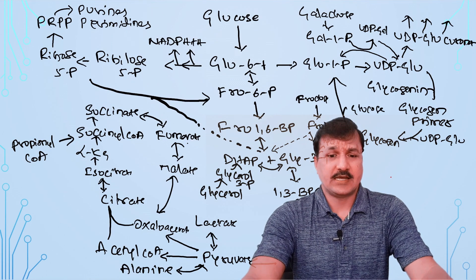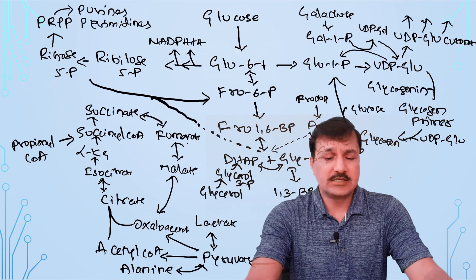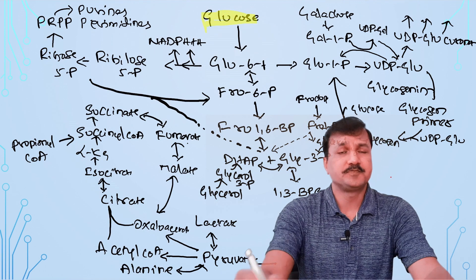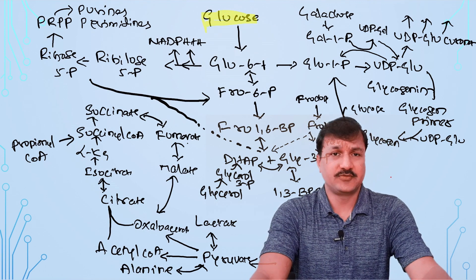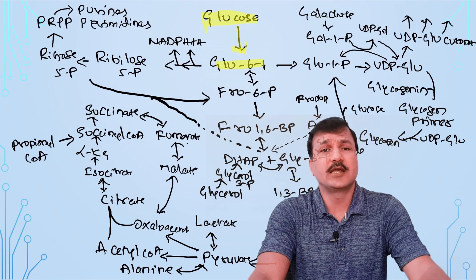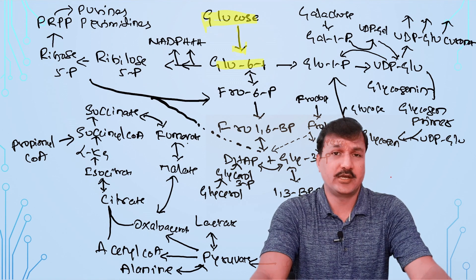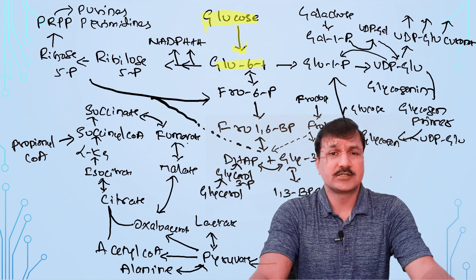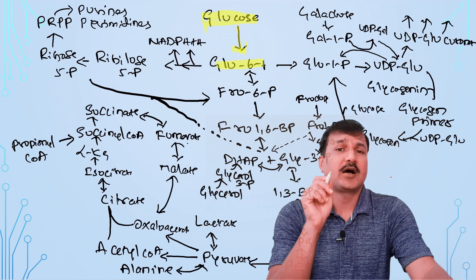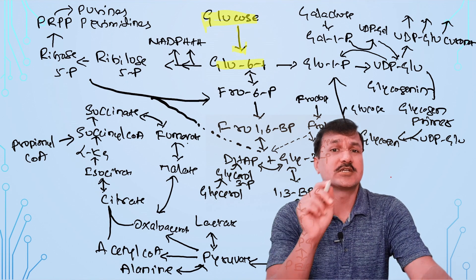The very first pathway is glycolysis. The conversion of glucose into glucose-6-phosphate is done by glucokinase and also hexokinase — two enzymes for the same reaction. Glucokinase is present in the liver and beta cells of pancreas, whereas hexokinase is present in extrahepatic tissue. Glucokinase is a high Km and high Vmax enzyme, whereas hexokinase is a low Km and low Vmax enzyme.